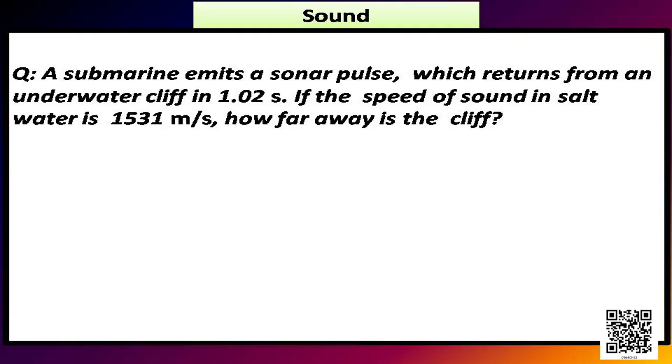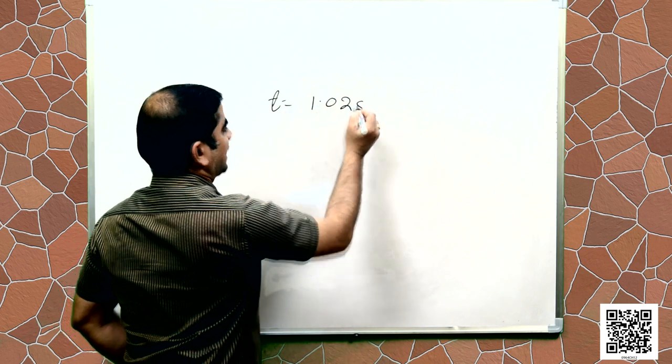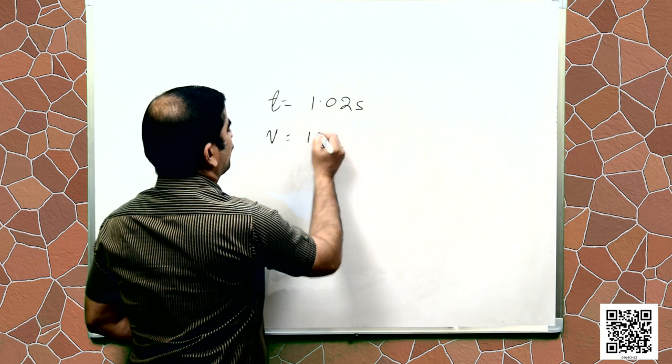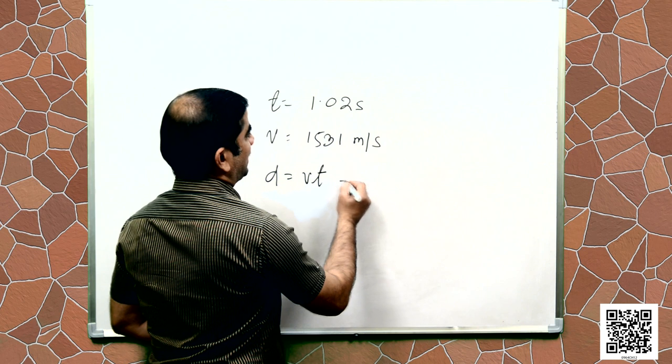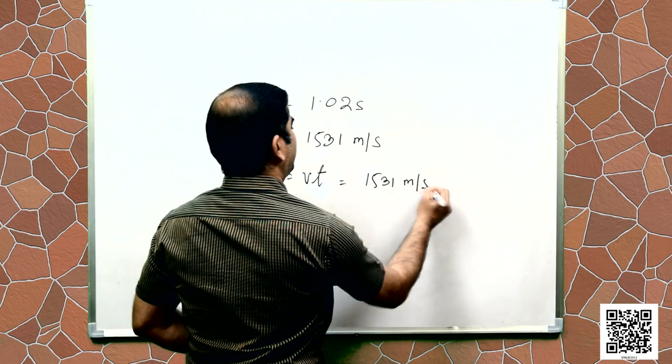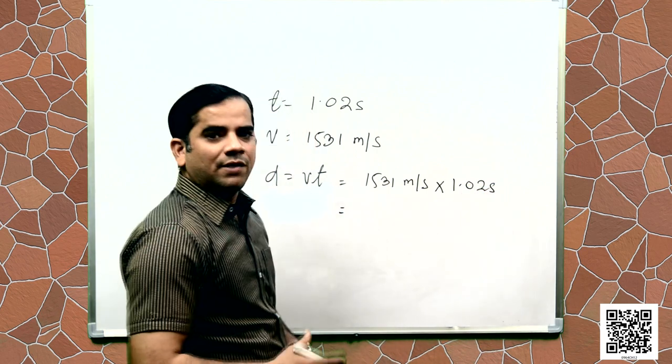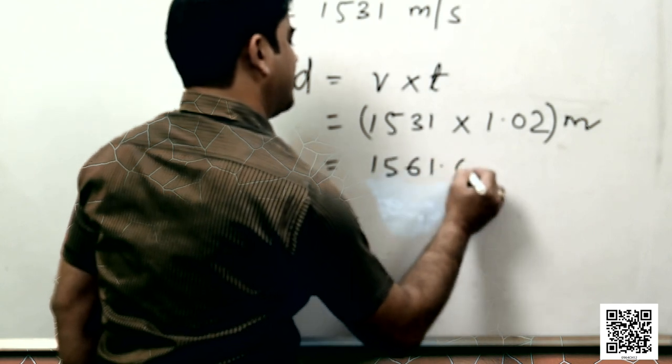Let us now discuss a question that is given in your book. A submarine emits a sonar pulse which returns from an underwater cliff in 1.02 second. If the speed of sound in salt water is 1531 meter per second, how far away is the cliff? It is given that T is equal to 1.02 second and V is equal to 1531 meter per second. So distance D is equal to V into T, that is 1531 meter per second into 1.02 second. When we calculate, that comes up to 1561.62 meter.